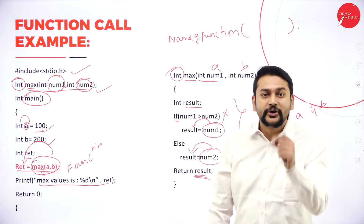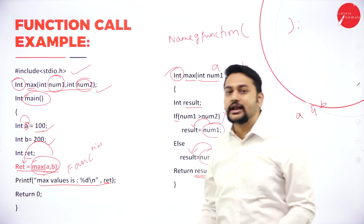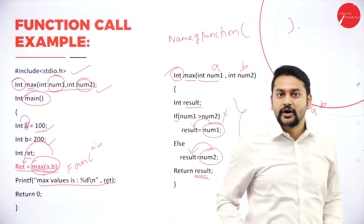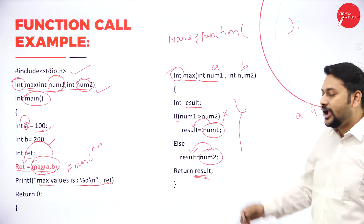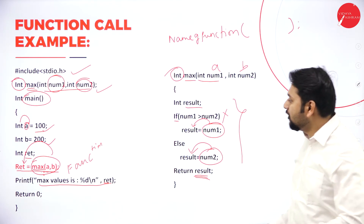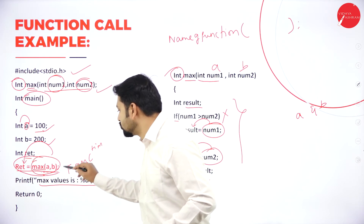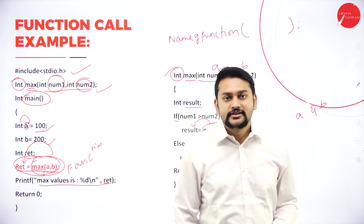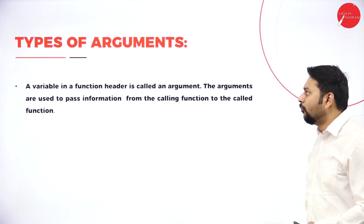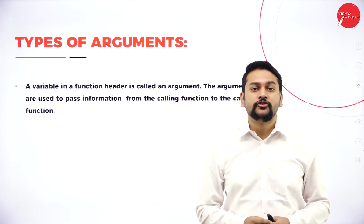The biggest value is assigned to 'ret', and that's what I'm printing — the biggest value. The variable 'ret' prints the biggest number. At the end, I have written zero. This is how the function call works. Moving on to the next topic: different types of arguments.